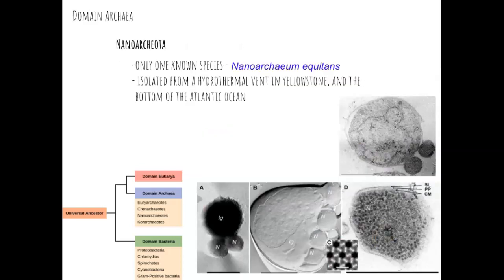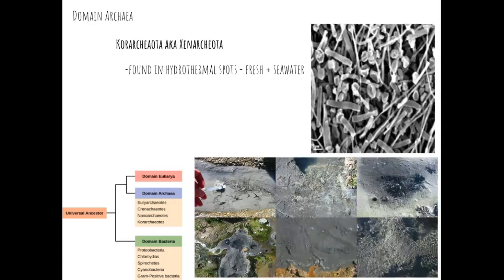The third type of archaea is the Nanoarchaeota, which has only one known species: Nanoarchaeum equitans. It was only isolated from a hydrothermal vent in Yellowstone and the bottom of the Atlantic Ocean — it is very rare and only one species has been found so far. The last type are the Korarchaeota, or Xenarchaeota, which are found in hydrothermal spots in both fresh and seawater, but not a lot is currently known about them.